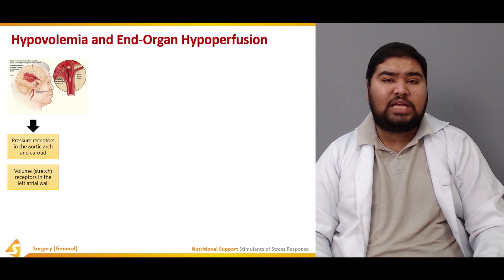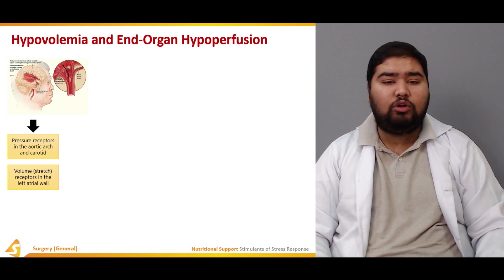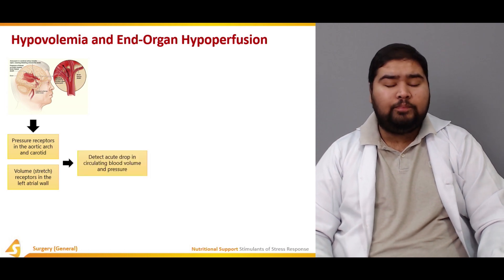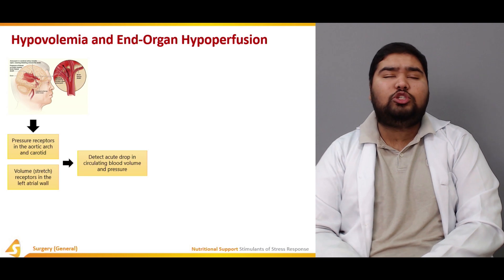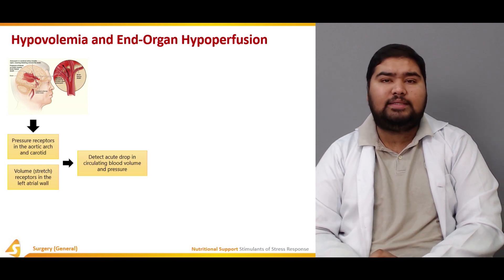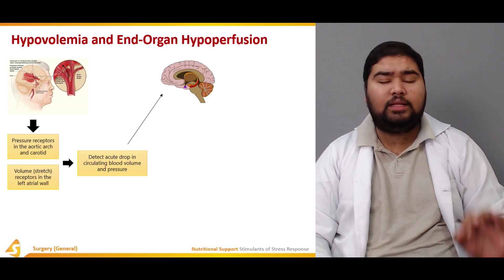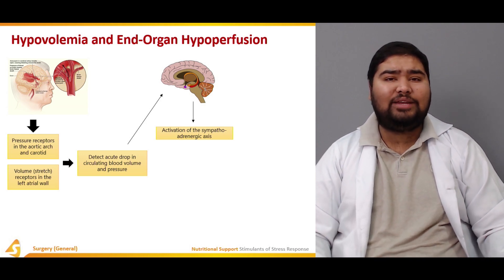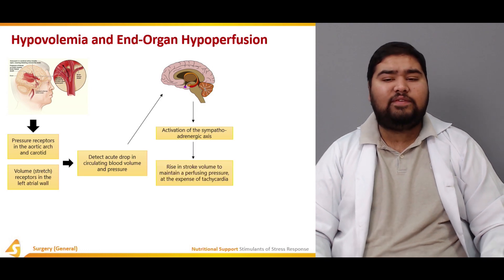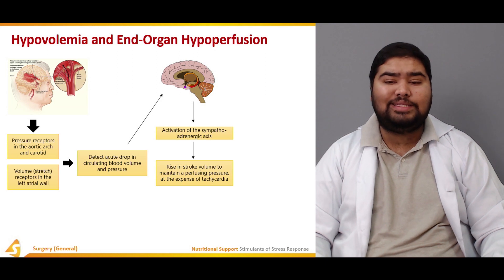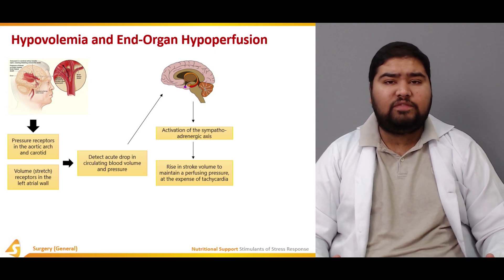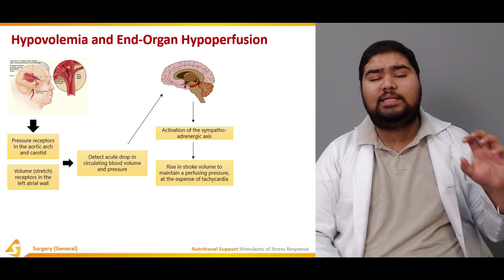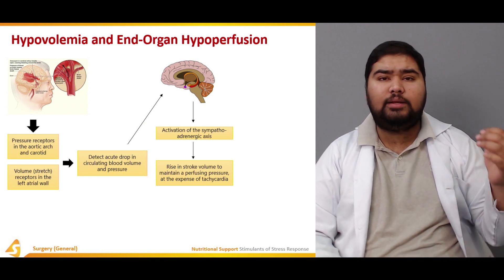The pressure receptors in the aortic arch and the carotid bodies are volume stretch receptors. There are also volume stretch receptors in the left atrial wall. Both of them detect an acute drop in circulating blood volume as well as blood pressure. When they detect this, they send signals to the brain, activating the sympatho-adrenergic axis, which causes a rise in stroke volume to maintain perfusing pressure, at the expense of tachycardia.